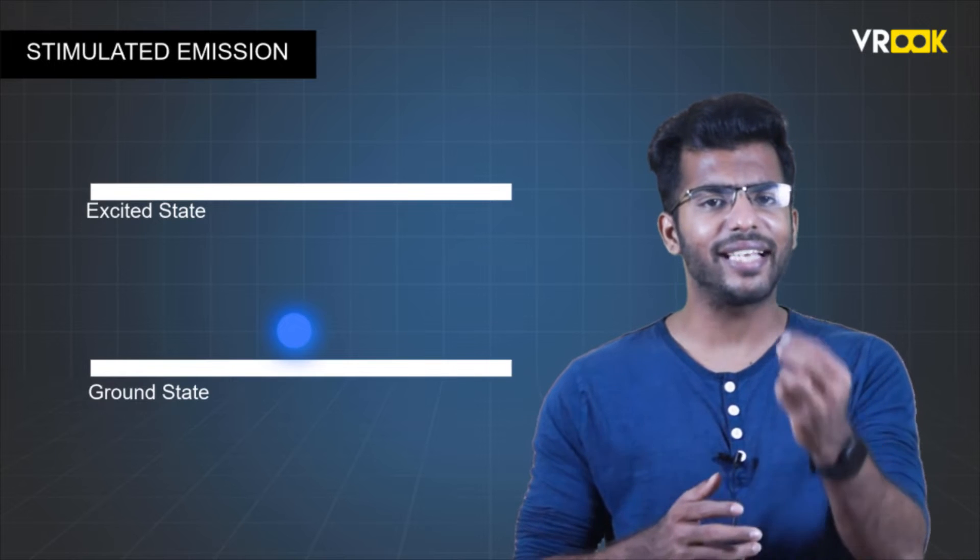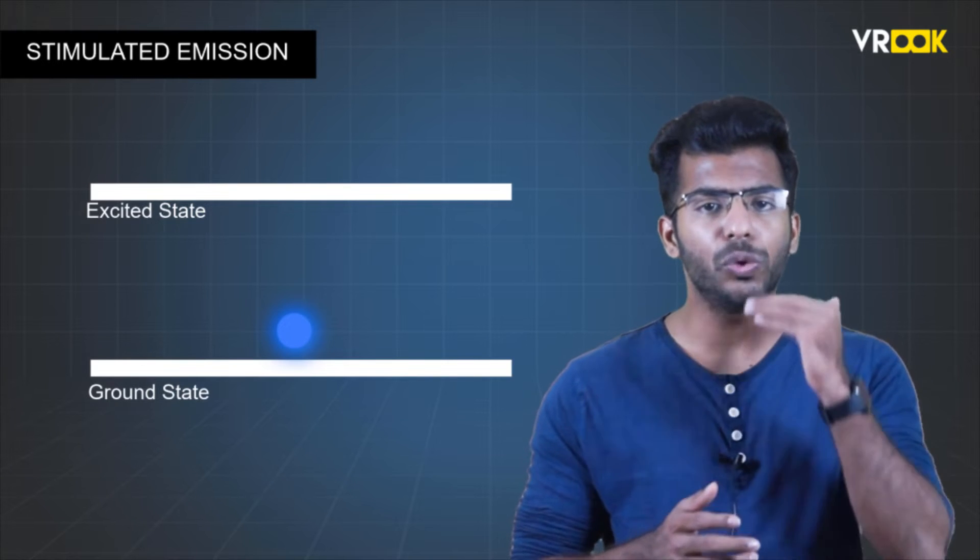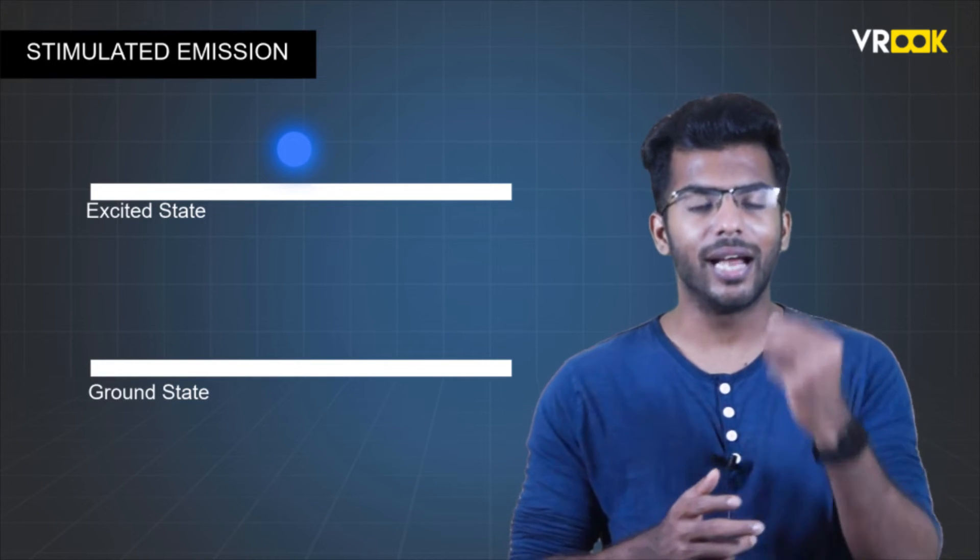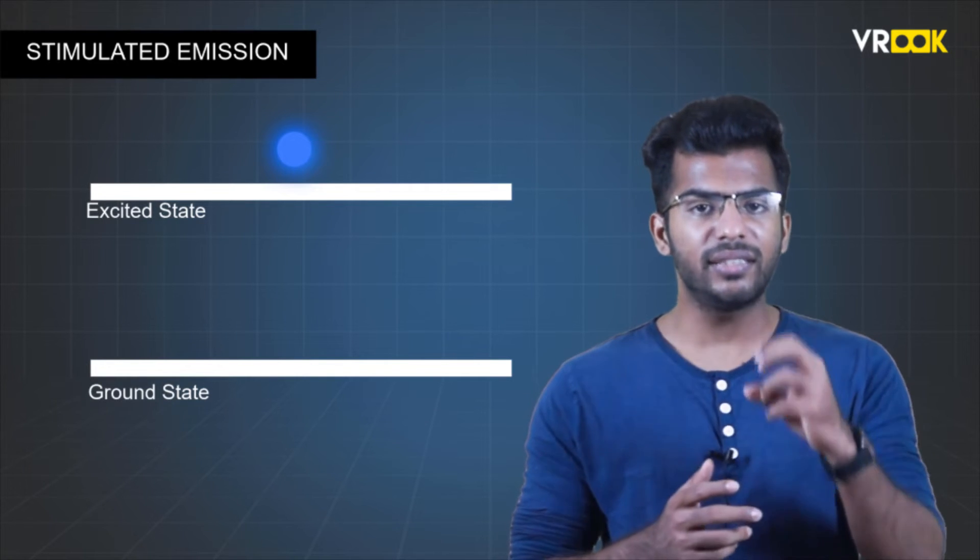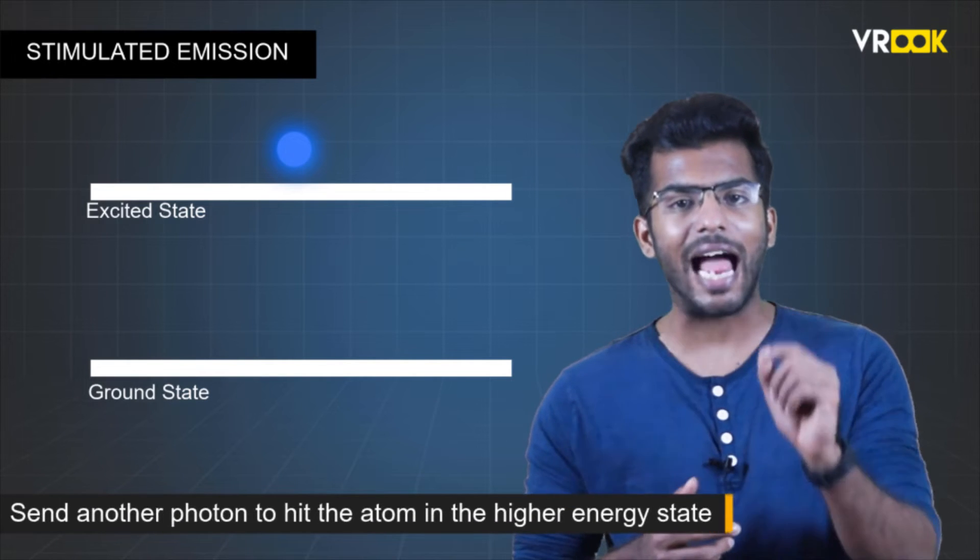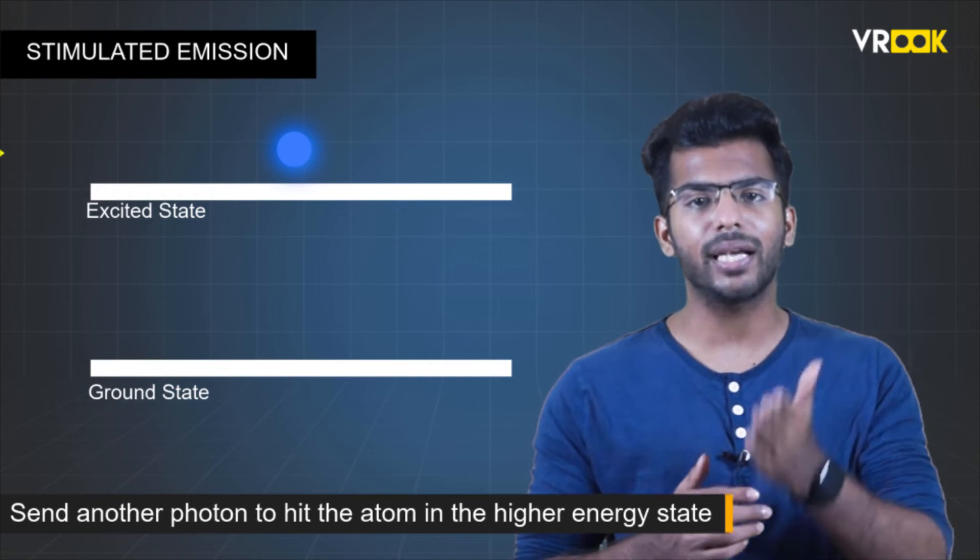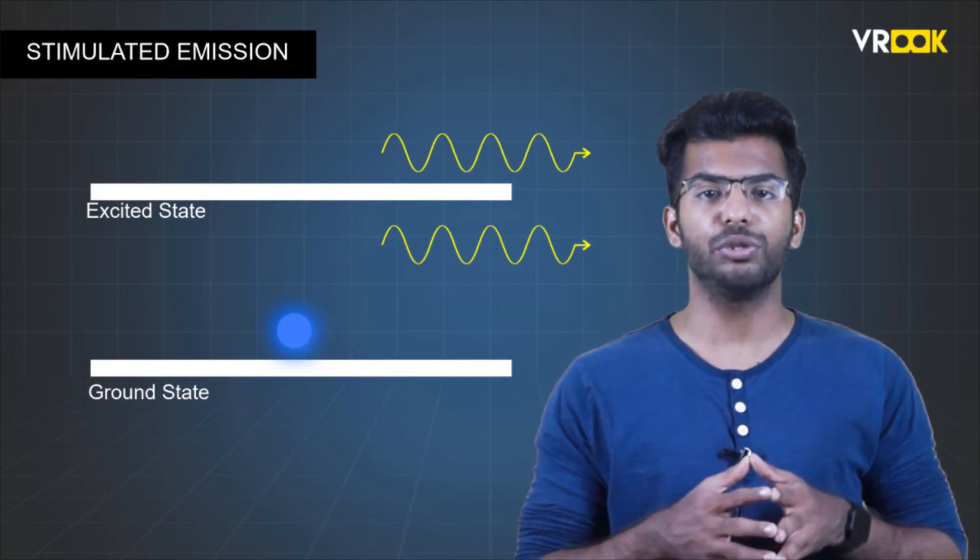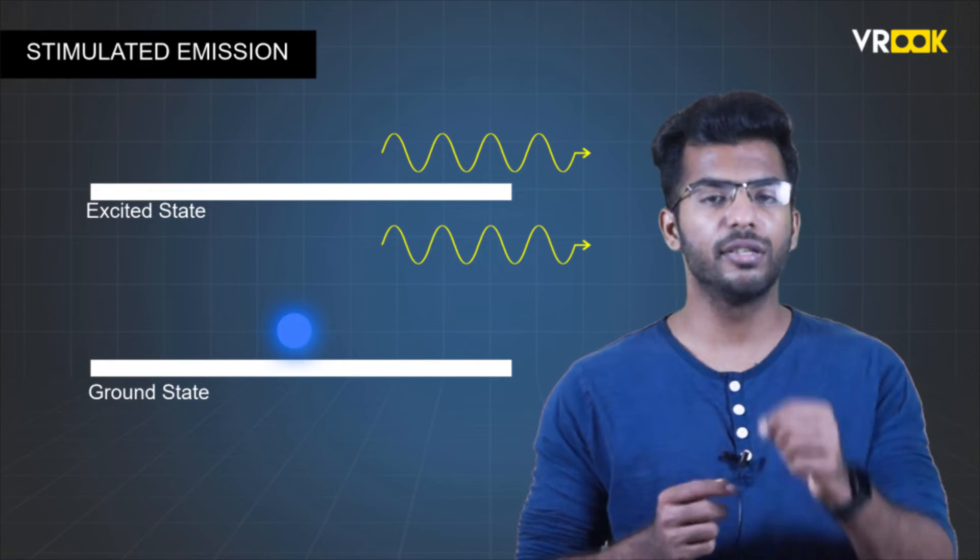We saw how we can excite a ground state atom to reach the excited state. It stays there for a brief period and comes back. In stimulated emission, we will send another photon to hit the atom in a higher energy state and make it come back to the ground state. Similar to spontaneous emission, the atom will release a photon.